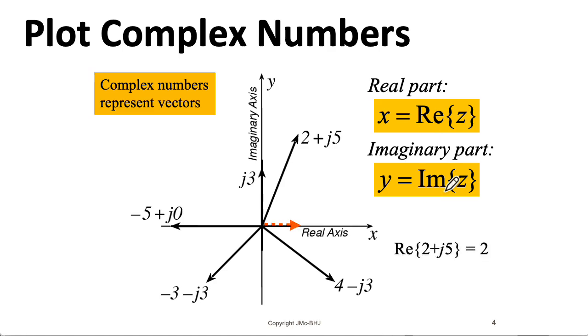One thing you want to be careful with is that when you take the imaginary part of a number, that result itself is a real number. So on an exam, if we ask you what's the imaginary part of 2 plus j5, do not write j5. This is very, very wrong. We'll take off points.